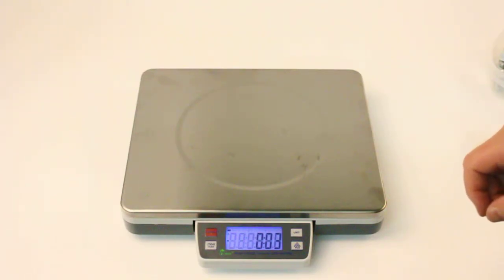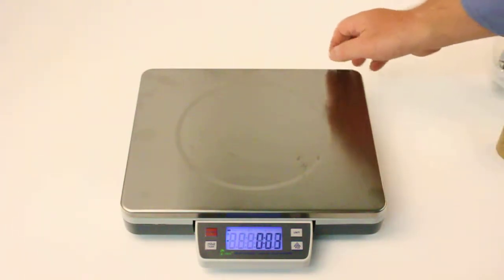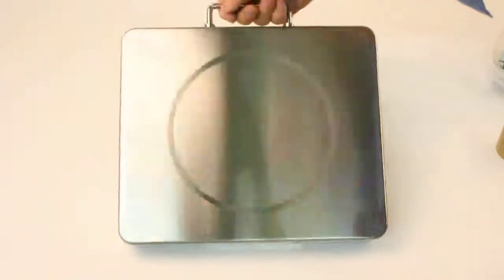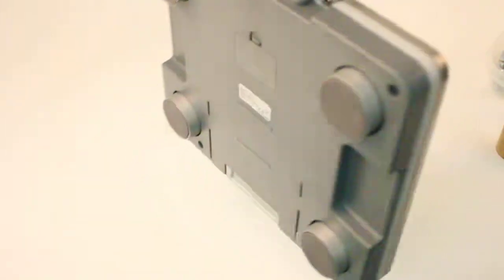The CSS Compact Shipping Scale comes with a retractable display and a convenient handle to transport the scale, and to use it wherever it is required.